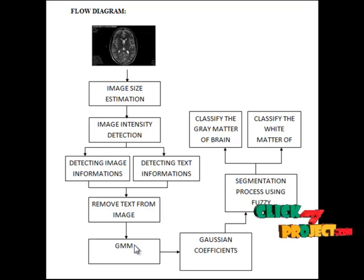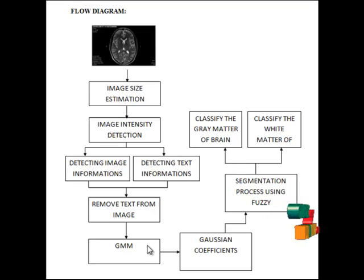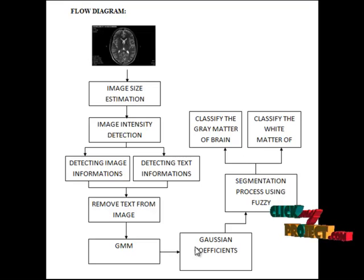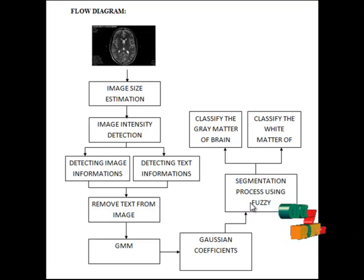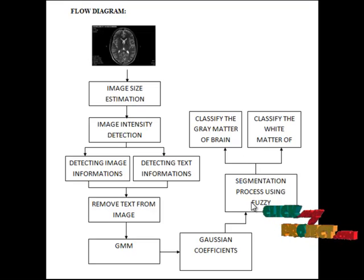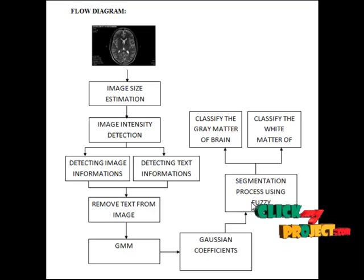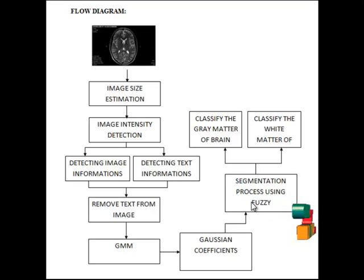In the GMM algorithm, it extracts the Gaussian coefficients. These Gaussian coefficients are then given to the Fuzzy algorithm to segment the given brain image. In the segmentation process, it will segment the gray matter and white matter separately.